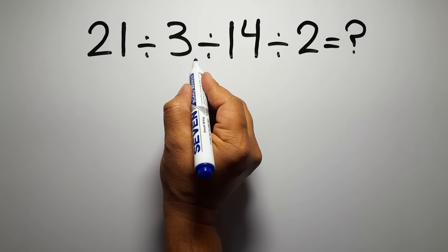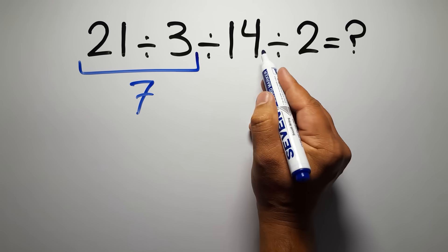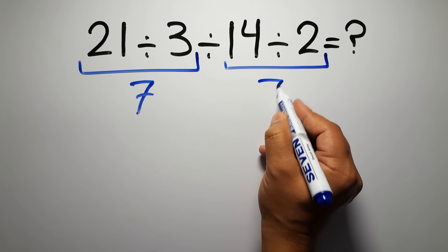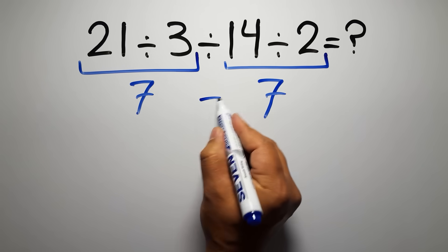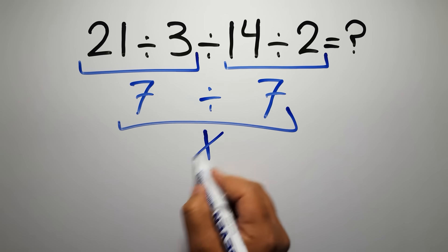21 divided by 3 gives us 7, and here we have 14 divided by 2 which gives us 7, so 7 divided by 7 equals 1. But this answer is not correct.